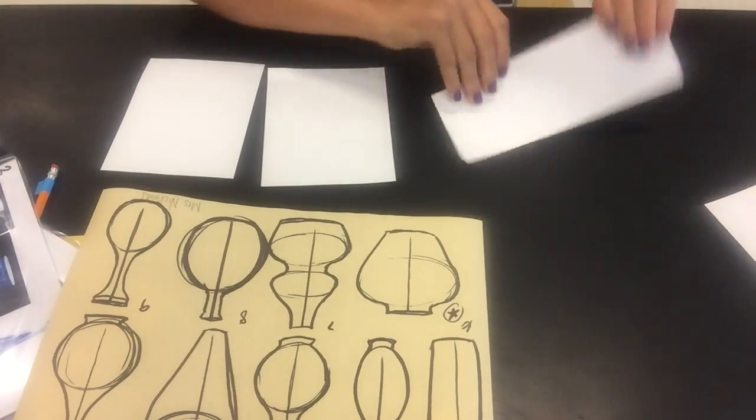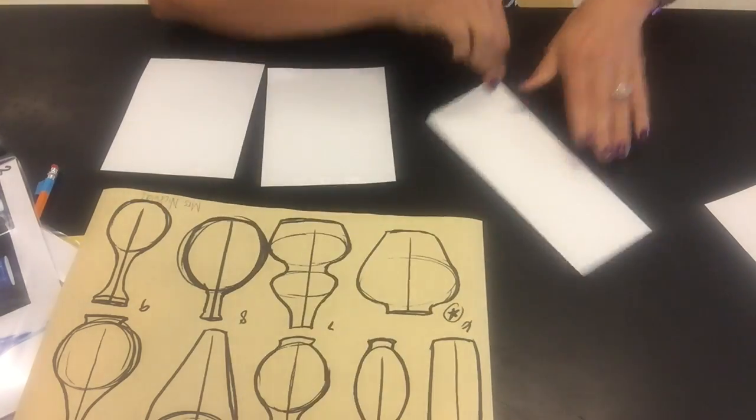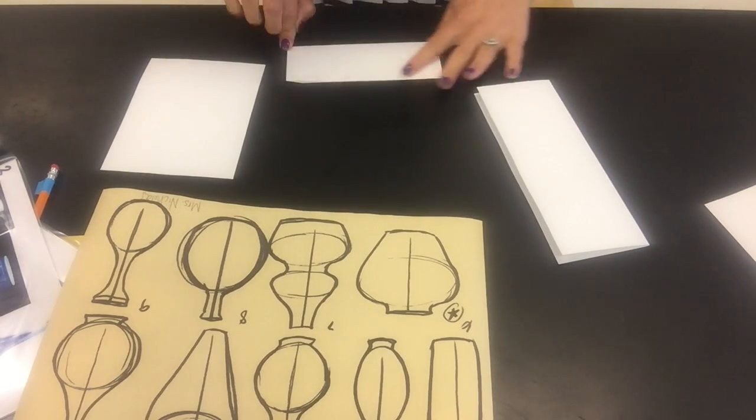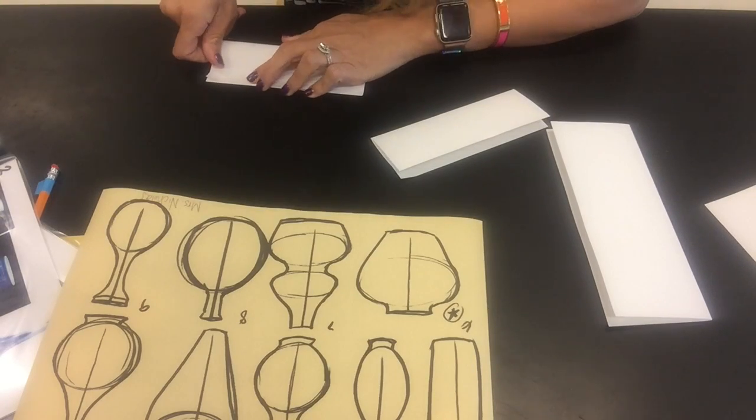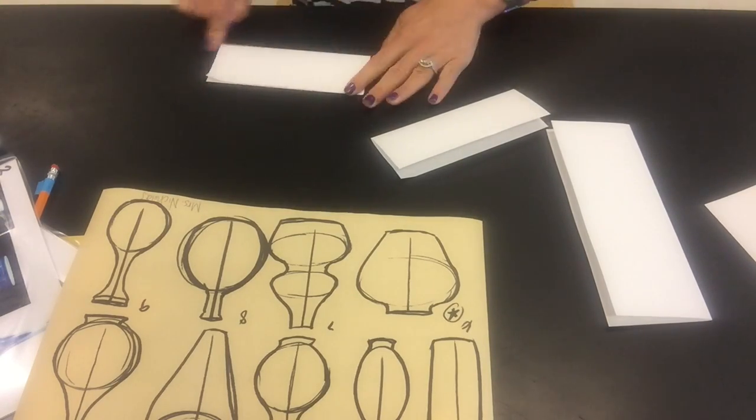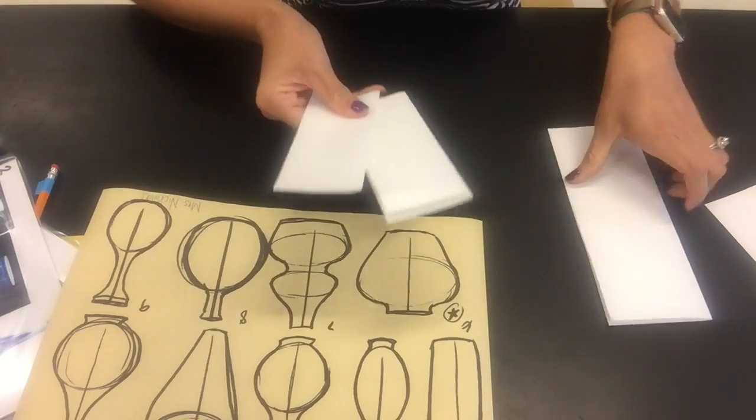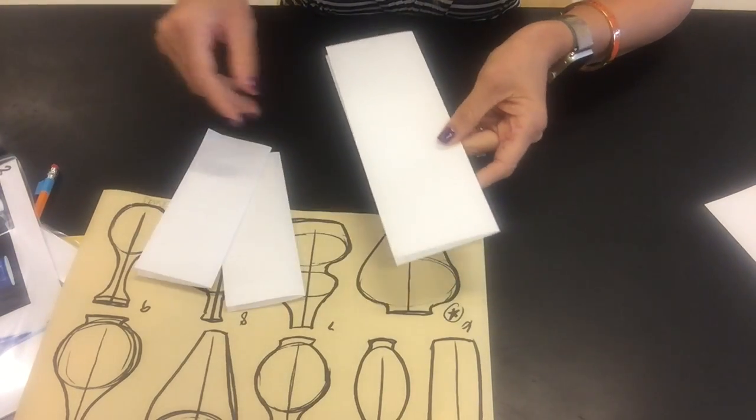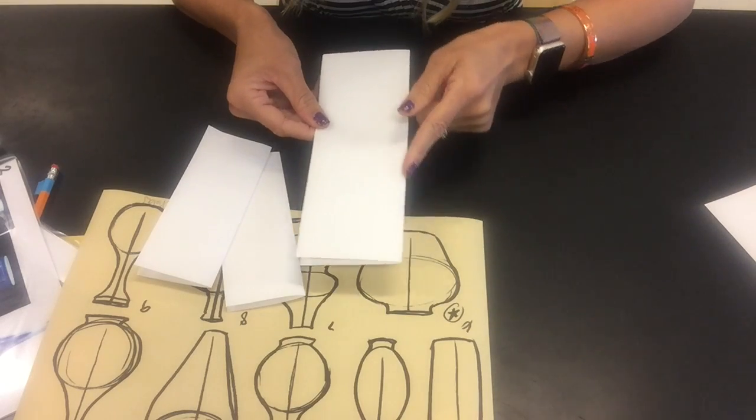All right, so I have all three papers folded in half. Now the trick with this is you have to make sure that you're doing your drawing where the center of the vase ends up on the fold. If you accidentally do your drawing on the open side, when you go to cut it out, your vase will fall apart into two pieces. So that's the number one thing that you have to remember.